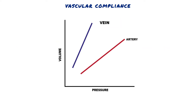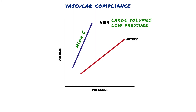This figure illustrates the principle of compliance and shows the relative compliance of veins and arteries. For each type of blood vessel, volume is plotted as a function of pressure. The slope of each curve is the compliance. The compliance of the veins is high — the veins hold large volumes of blood at low pressure. Compliance of the arteries is much lower; the arteries hold much less blood than the veins, and they do so at high pressure.